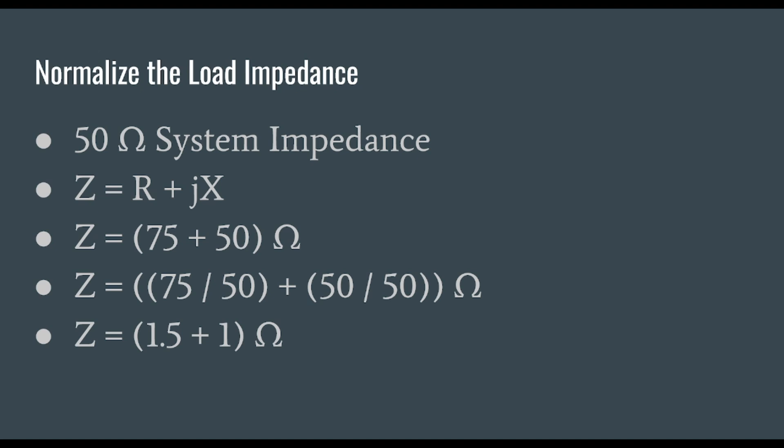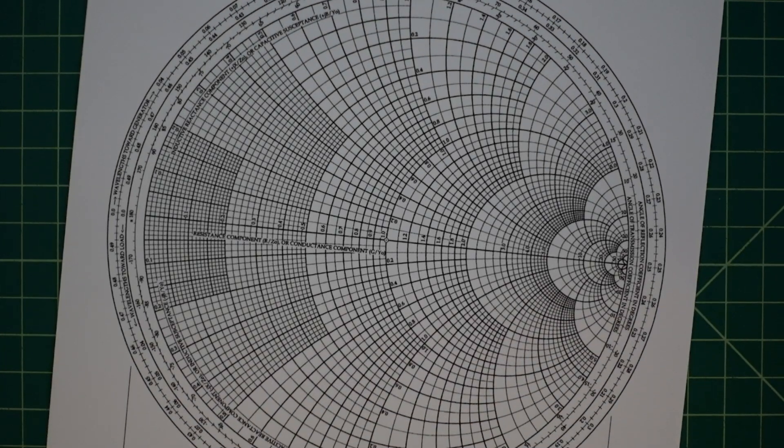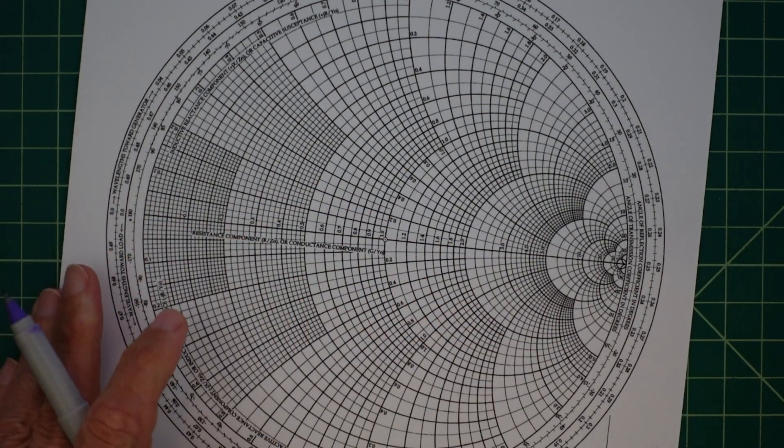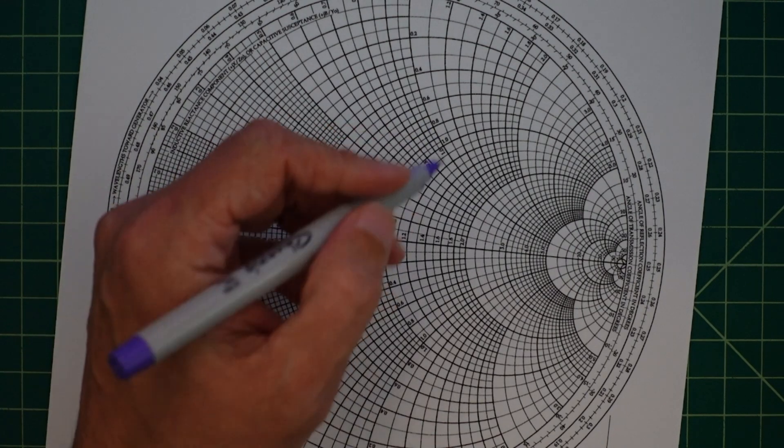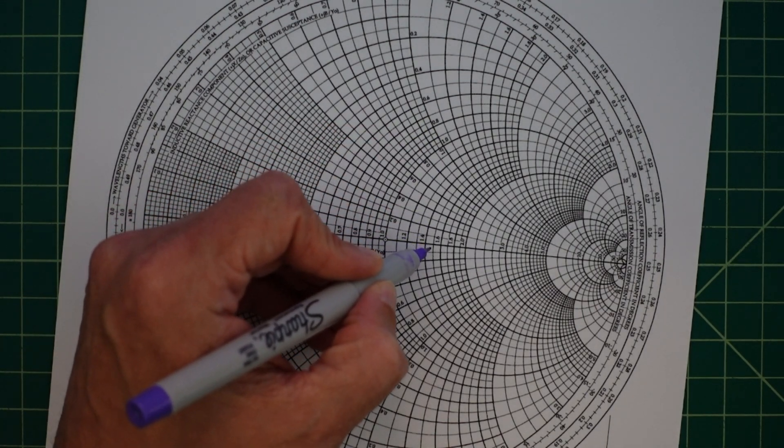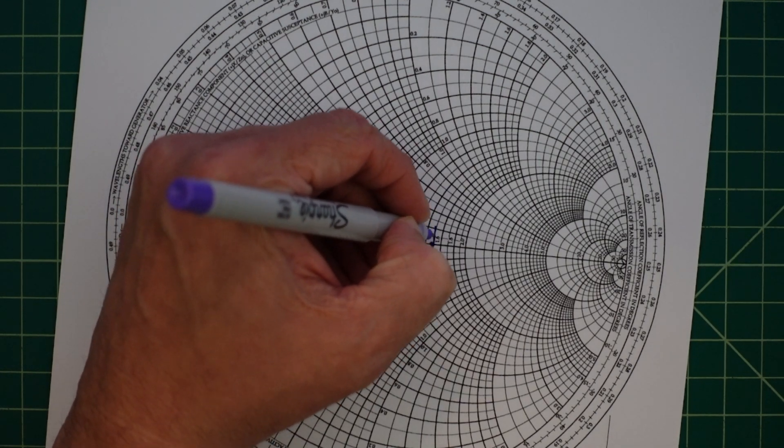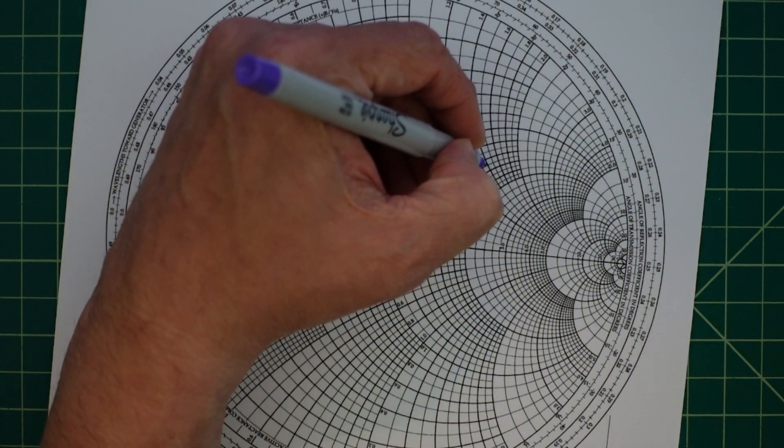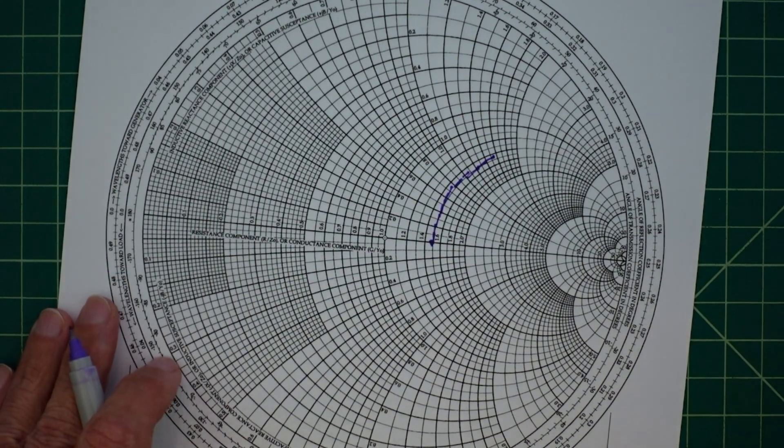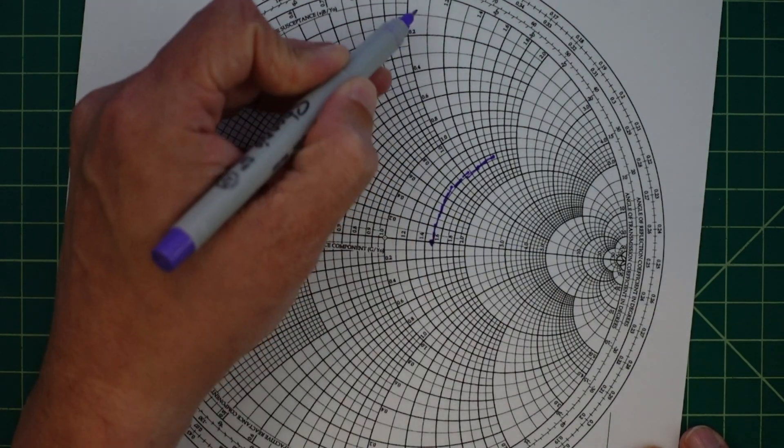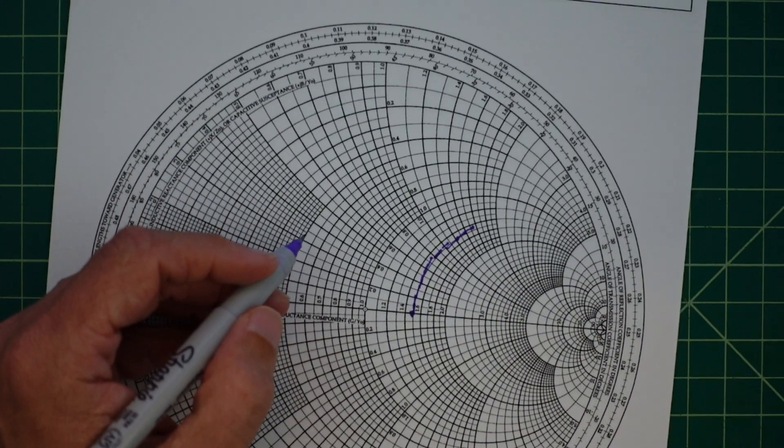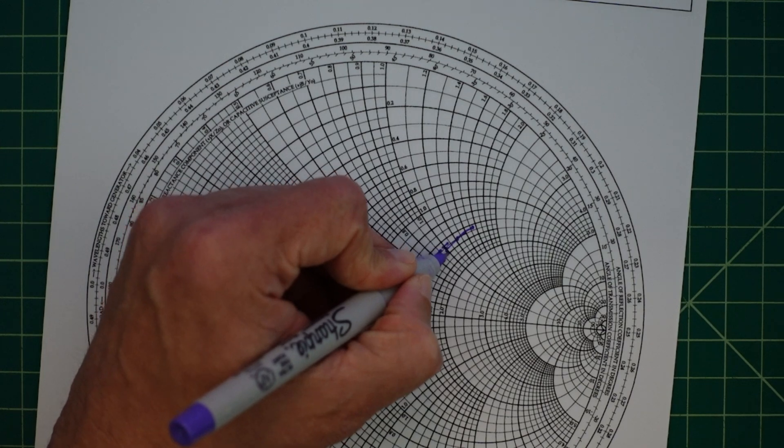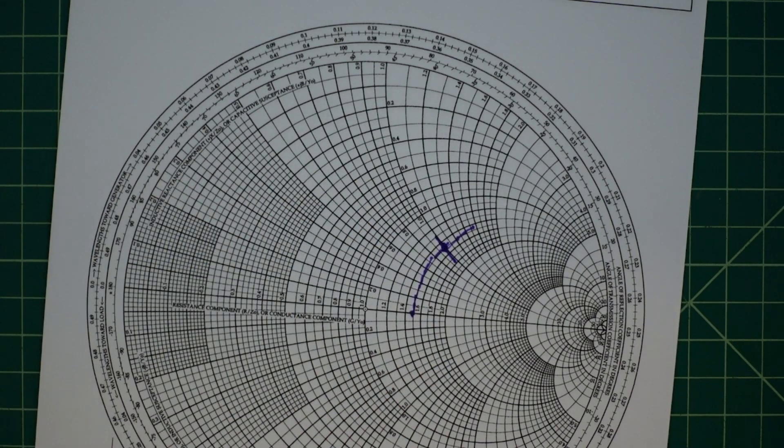Now we're going to plot our impedance on this Smith Chart. We're going to use our circles of resistance to find 1.5 and I believe that's going to be right around here. I'm going to highlight this arc in the positive direction because we had inductive measurements. I'm going to use this circle of reactance and I need to find the one for number one and that comes down right here. This is where they intersect and that would be our normalized impedance.